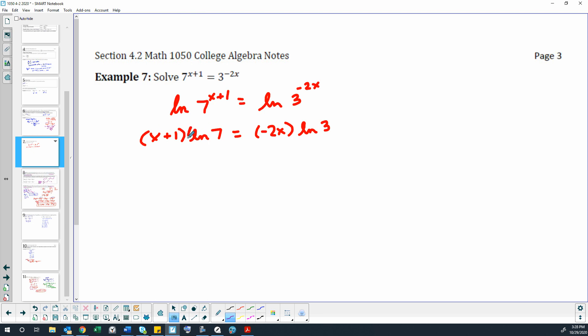Okay, so natural log 7—that represents a number that we don't know without throwing it in our calculator and getting a big ugly decimal. So it's best to just keep it written as natural log 7, but it represents a number.